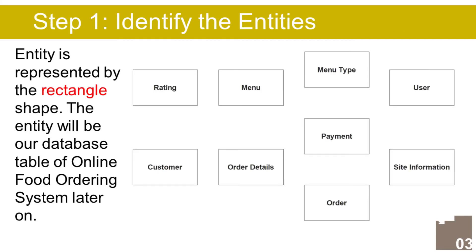Step 1: Identify the entities. An entity is represented by the rectangle shape. The entity will become our database table of the online food ordering system later on.